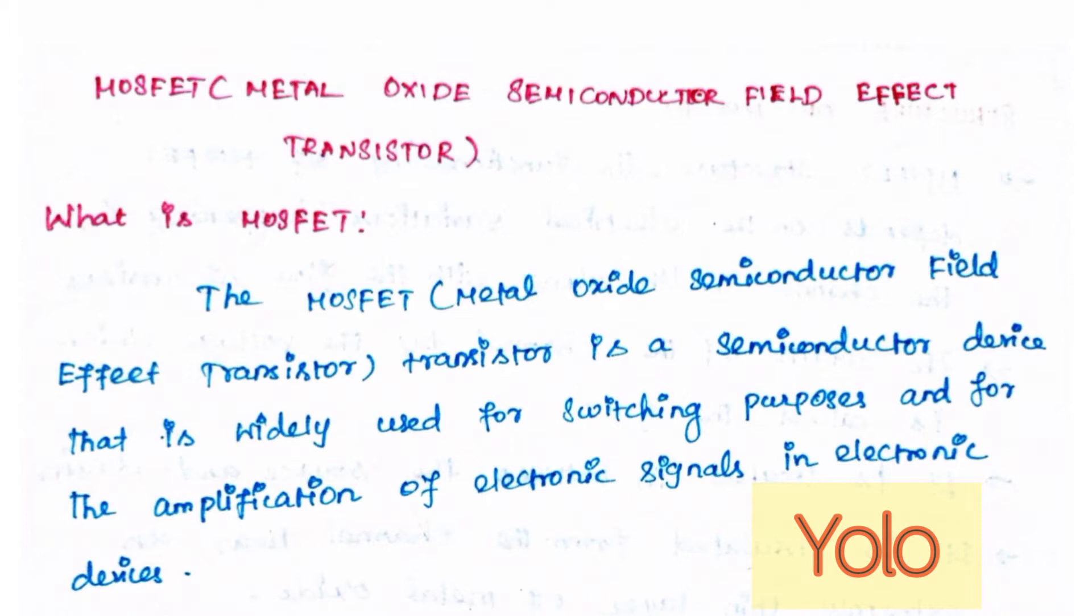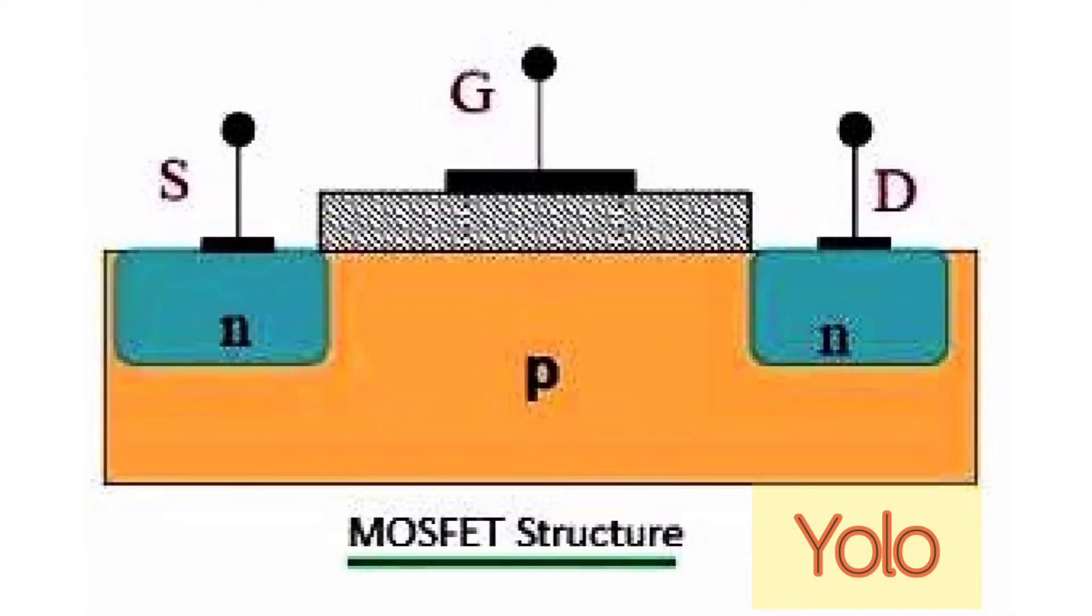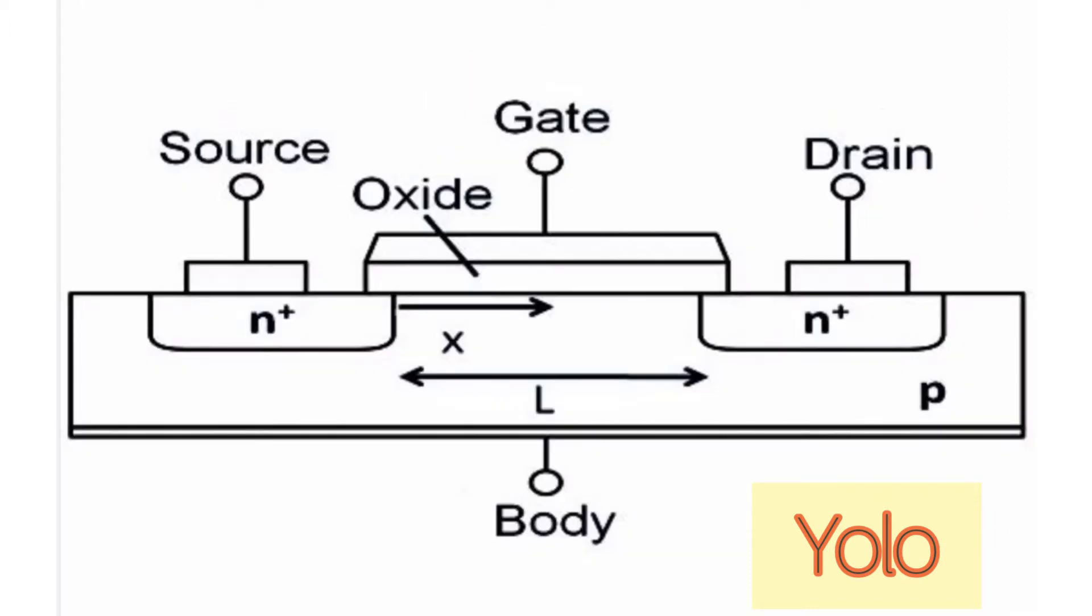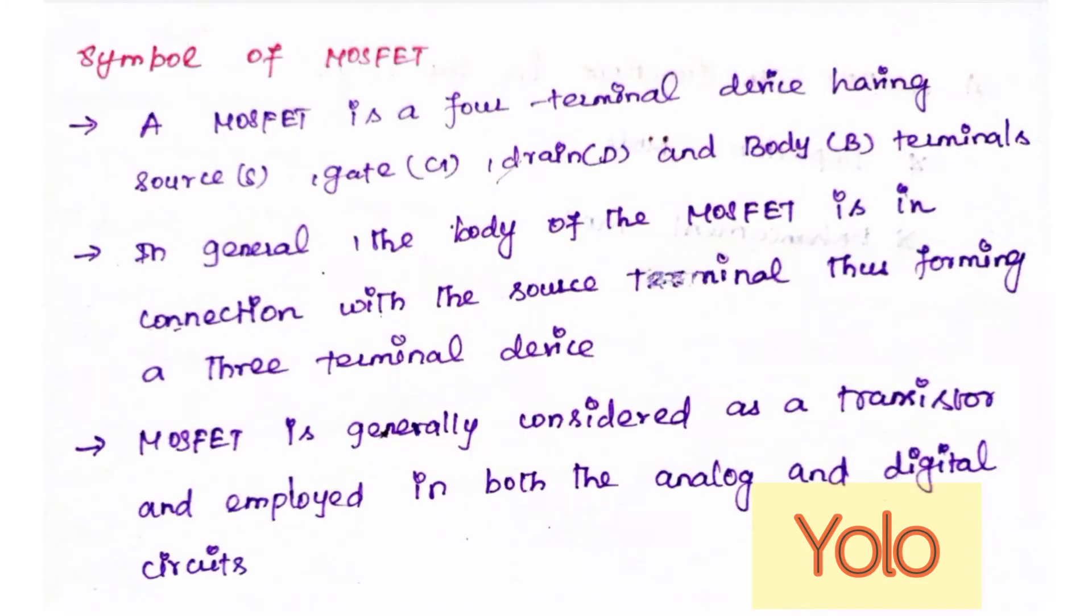Simply put, a MOSFET is a four-layer device having source, gate, drain, and body terminals. In general, the body of the MOSFET is in connection with the source terminal, thus forming a three-terminal device. MOSFET is generally considered as a transistor and employed in both analog and digital circuits.